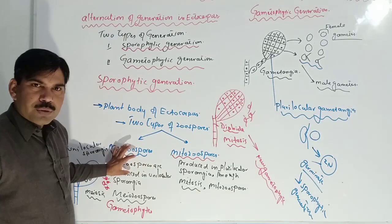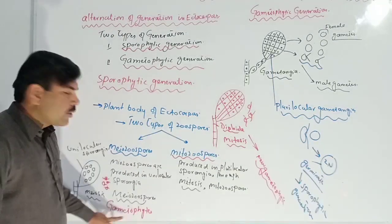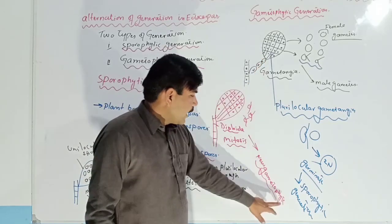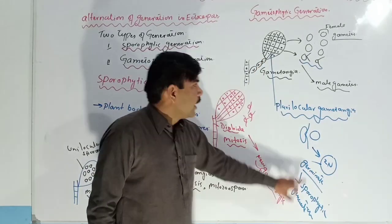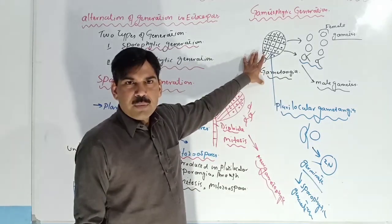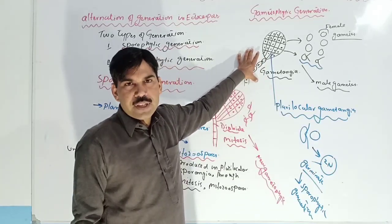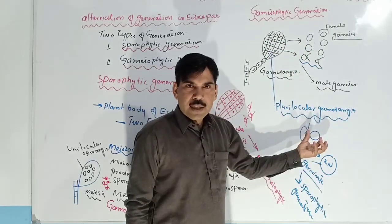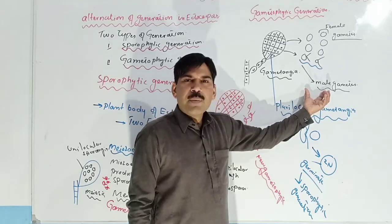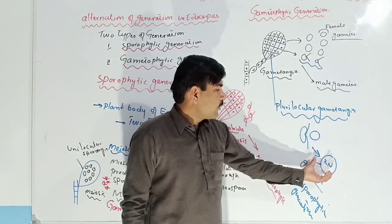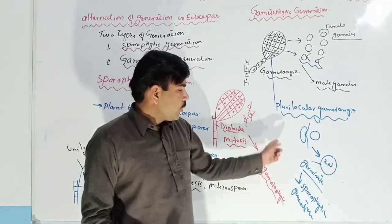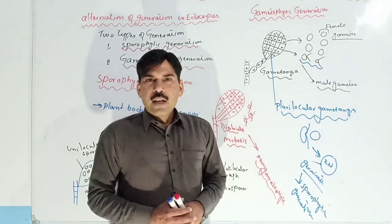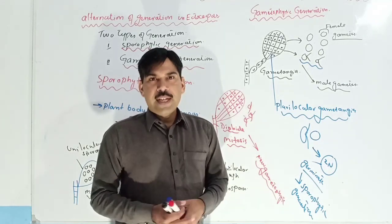To summarize: meozoospores and mitozoospores give rise to the gametophyte generation. The gametophyte generation produces the sporophytic generation. How? The gametophyte generation produces gametangia; inside the gametangia, gametes are produced. These gametes fuse together to form a zygote, and the zygote germinates to produce a new sporophyte plant body. That concludes the alternation of generation in Ectocarpus.